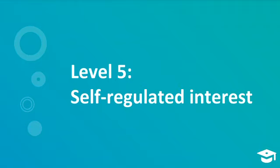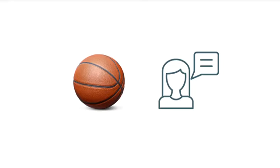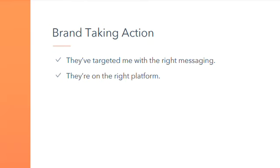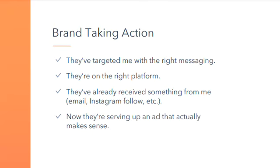In marketing, I use the example of a smoothie company that decided to partner with a celebrity — a traditional endorsement deal, influencer marketing, or a partnership around something like basketball. They targeted me because they knew I liked basketball. So this brand is doing things based on findings from previous levels. They're targeting me with the right messaging, ensuring they're on the right platform, and they've already received something from me — whether my email or an Instagram follow. Now they're serving up an ad that actually makes sense because they've ensured all those bottom levels are addressed.